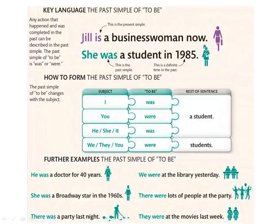We were at the library yesterday — كنا في المكتبة البارح. There were lots of people at the party. They were at the movies last week — كانوا في السينما last week.